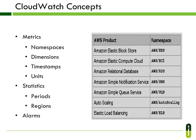Timestamps: each metric data point must be marked with a timestamp. Valid ranges are up to two weeks in the past or up to one day in the future. By default, CloudWatch creates a timestamp based on the time the data was received. It is better to provide the timestamp in UTC. All times reflect the UTC time zone. Periods: it is the length of time for a specific statistic. Duration has two types — short, as one minute or 60 seconds, and long, as two weeks or 1,209,600 seconds. Start time and end time are measured by counting periods.